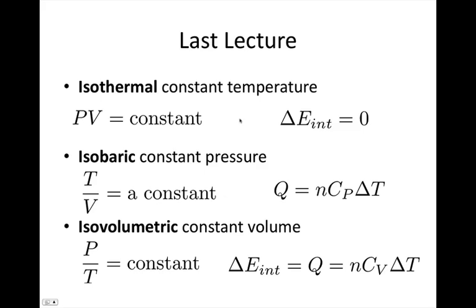Last lecture, we also looked at some definitions you really need to know. An isothermal process happens at constant temperature — for example, one which occurs with very little insulation and very slowly, so it's constantly in thermal equilibrium with the surroundings. The equations that apply are PV is constant, from the ideal gas law where nRT are constant, and the change in internal energy equals zero.